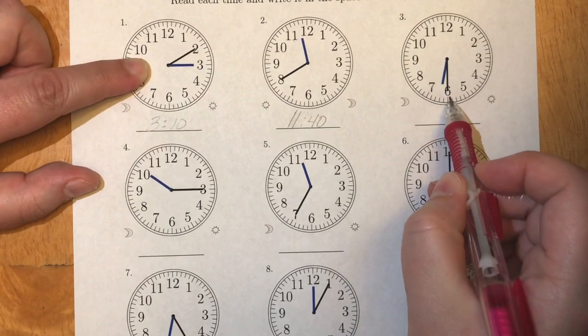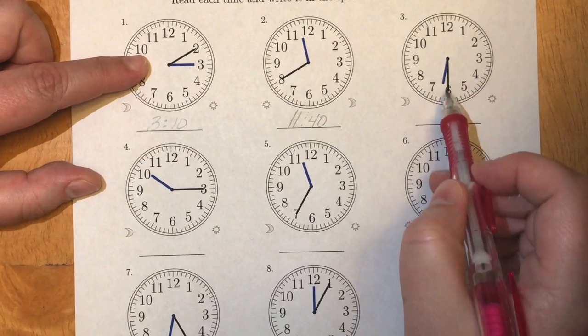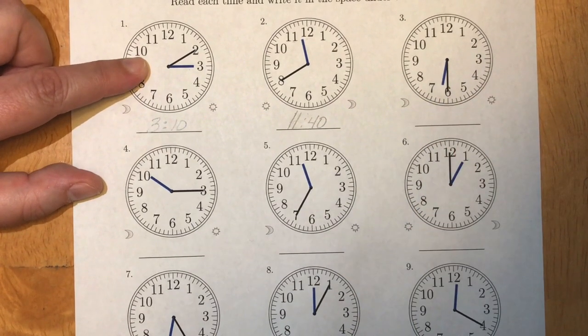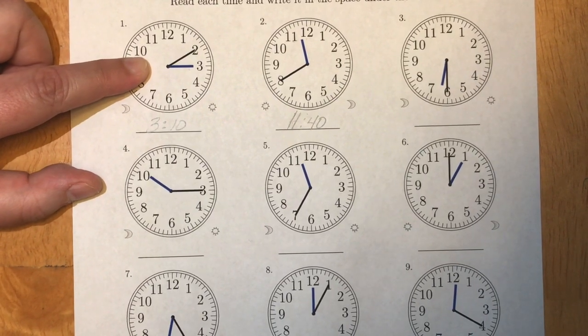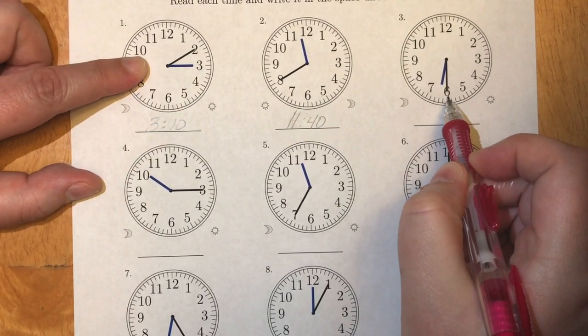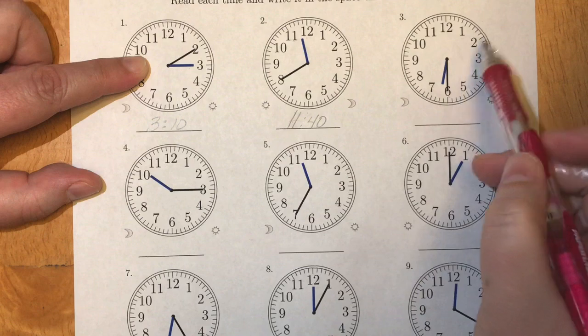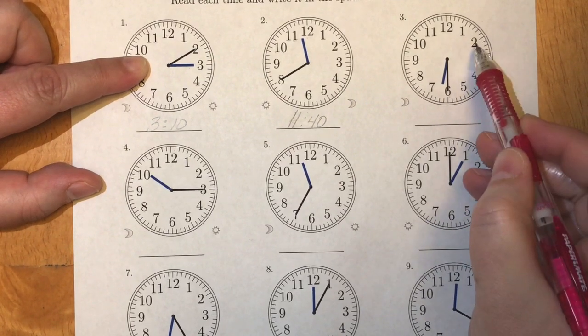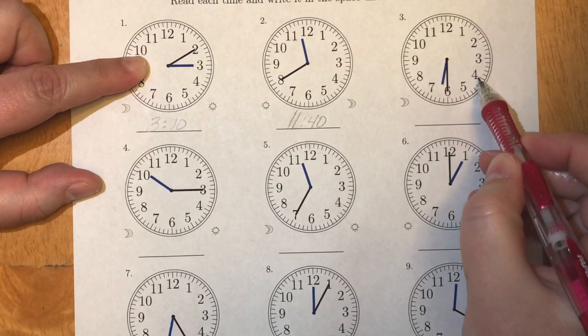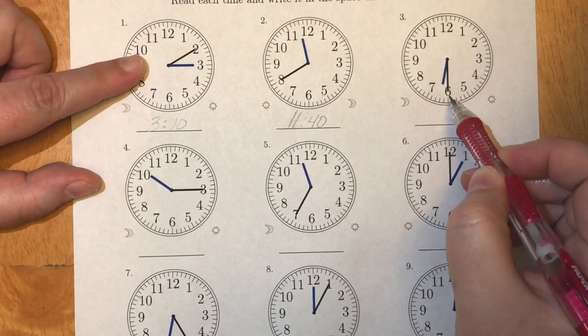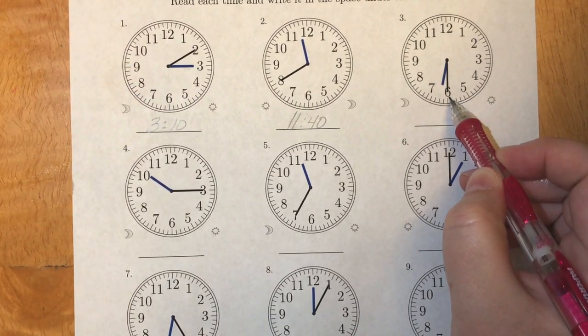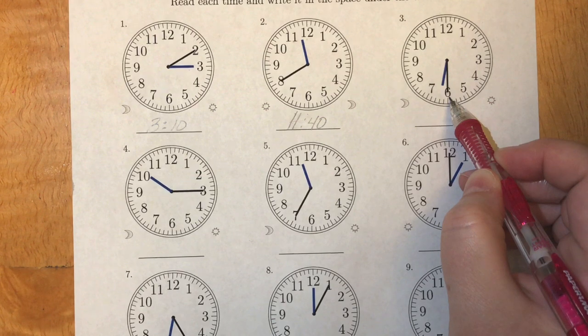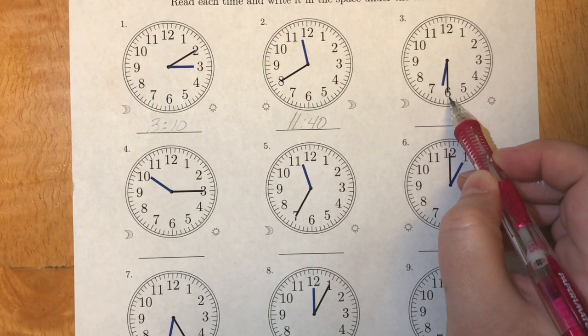Let's take a look at the third clock. Again our minute hand is the longer hand and it's currently pointing to the six. If I count around: five, 10, 15, 20, 25, 30. So we're at the half past mark or 30 minutes after the hour.